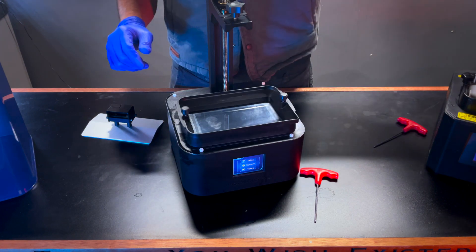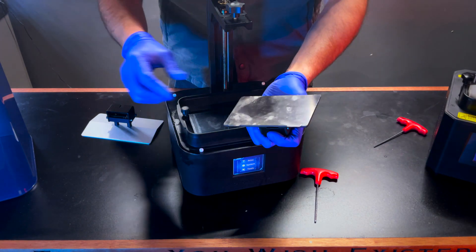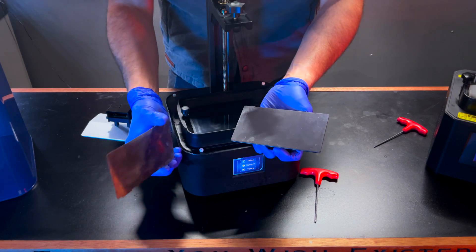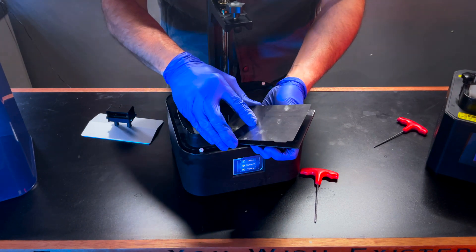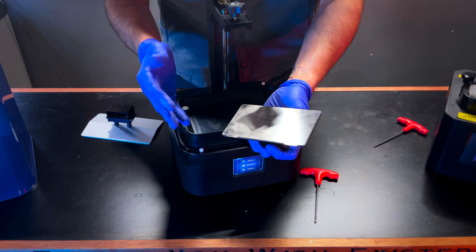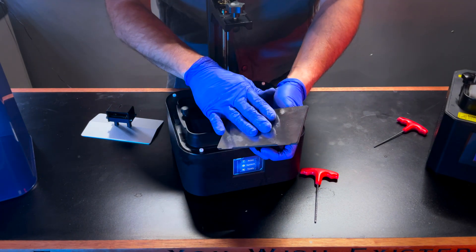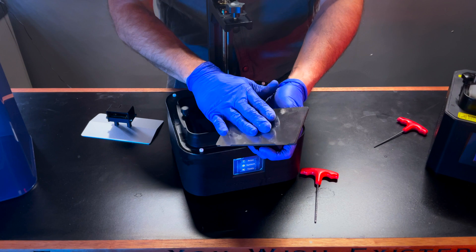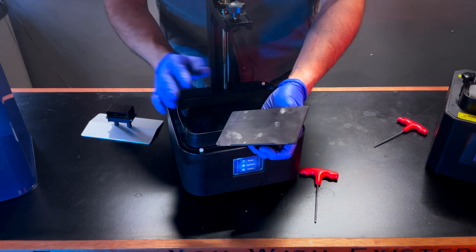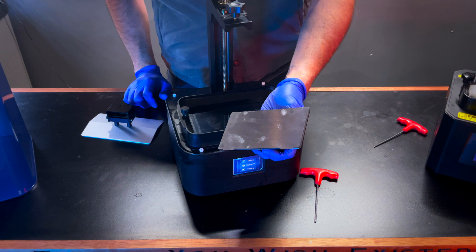Additionally, if you are going to use a build plate with a magnetic build plate attachment, this also needs to be installed before you level your build plate. And if you install one of these after you've already leveled your machine, then you will need to re-level your machine before you proceed with printing.